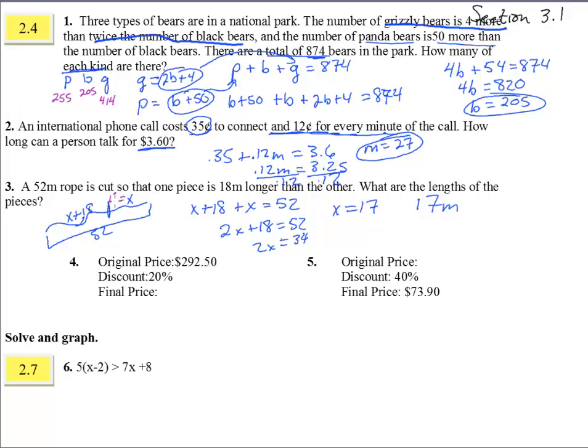So if that guy equals 17, then this guy equals 17 plus 18 is 35. So the other piece is 35 meters. Does that make sense? That guy's 18 bigger, yes, and they really do add to 52 meters, that's cool.